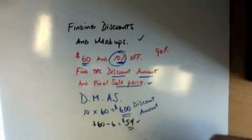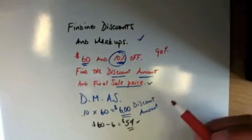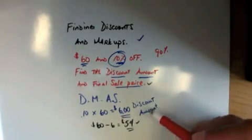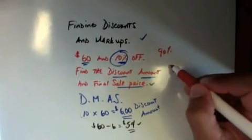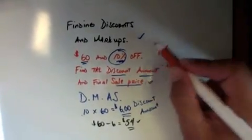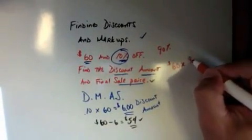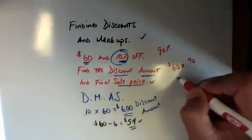To make it quick, to find the sale price: $60 times 90%, we can go .90. 6 times 9 is 54.